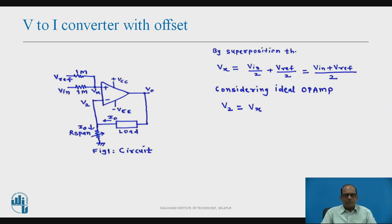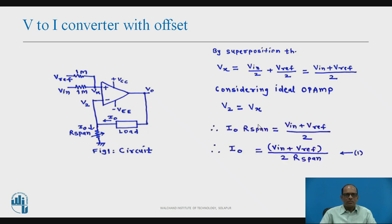Considering an ideal op-amp, voltage at the inverting and non-inverting terminals should be equal, that is φ+ = φ−. Now φ− equals φ_2 as shown in the figure, which equals φ_x = (φ_in + φ_reference) / 2. The voltage across R_span, i.e., φ_2, is given by load current I0 multiplied by R_span. So φ_2 = I0 × R_span = (φ_in + φ_reference) / 2.